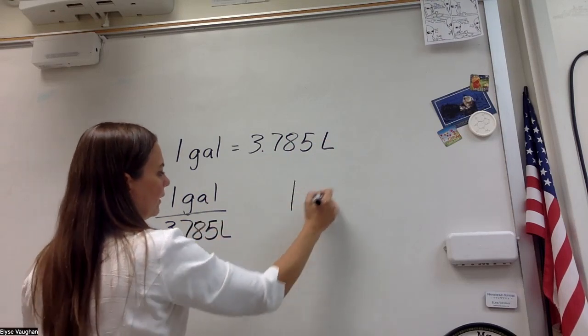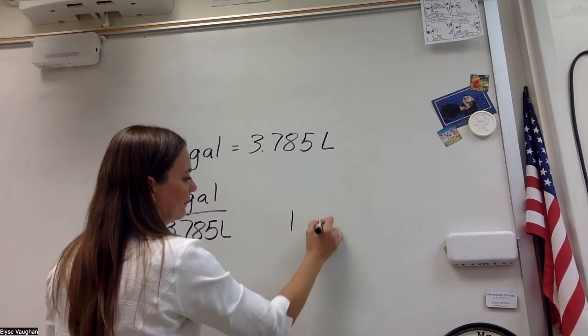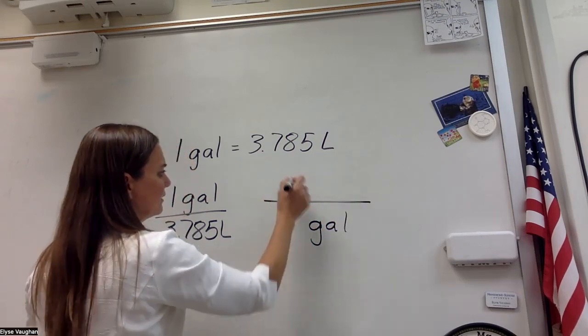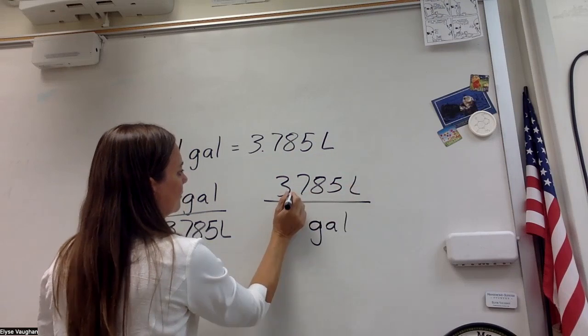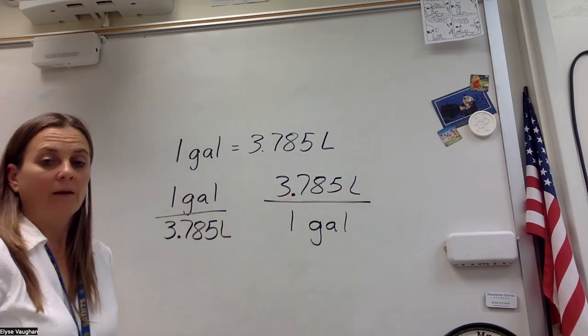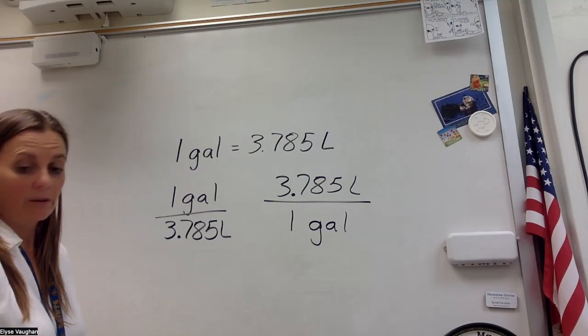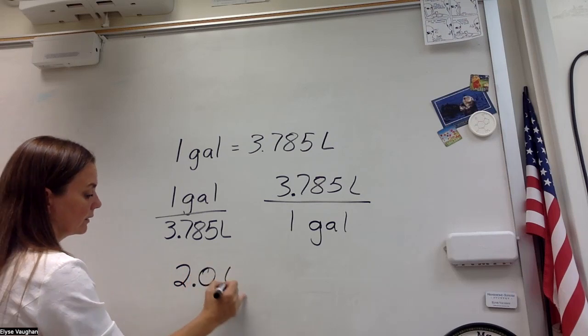I'm going to go ahead and write my two fractions. So I have one gallon is 3.785 liters, or one gallon is 3.785 liters. So again, I can use this either way. I'm trying to convert my 2 liters into gallons. So I'm going to start with my 2.0 liters.